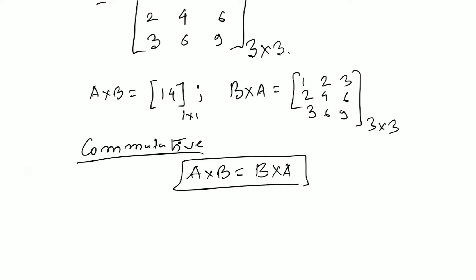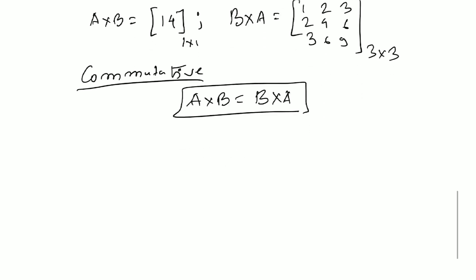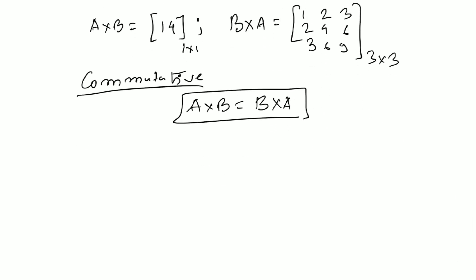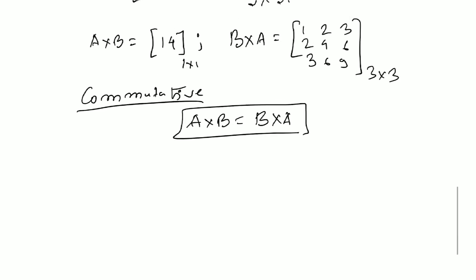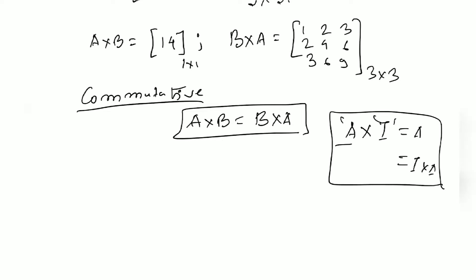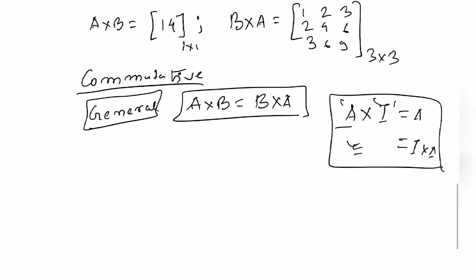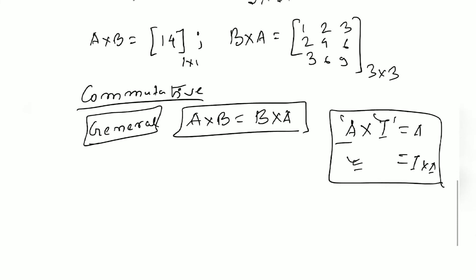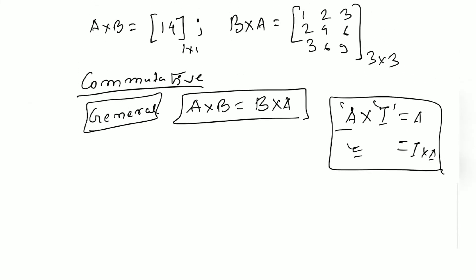We can clearly see that A×B = 14 (a 1×1 matrix) is not equal to B×A = [[1,2,3],[2,4,6],[3,6,9]] (a 3×3 matrix). This means commutativity for the product of two matrices is not feasible in general — A×B = B×A is not possible. It is only possible in special cases, such as when multiplying by the identity matrix I, where A×I = A = I×A.